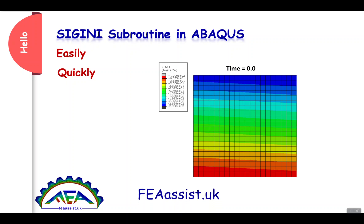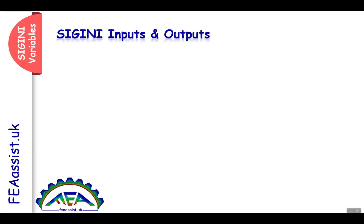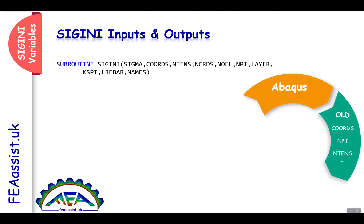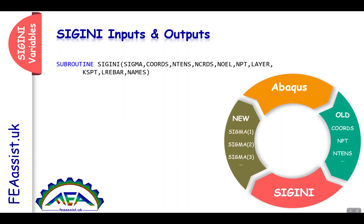To understand how to do that, stay with us. CKINI variables — the CKINI subroutine has some variables. Some of them are inputs from Abacus, and some of them are outputs to Abacus. Abacus computes the coordinates, for example integration points, the number of stress variables, a unit to define the initial stress field in the CKINI subroutine, and exports the stress field in X, Y, Z, and any direction to Abacus.